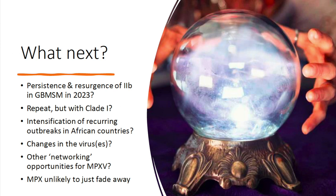What's next? Possibly persistence and resurgence of this 2B virus. The problem, if it has been brought under control by behavioural changes, is whether those behavioural changes will persist — and I don't think we should demand that they persist, because this is people's lives and they want to live their normal sexual lives. Could we see this again but with a more severe virus such as clade one? I think we probably will see more recurring outbreaks in African countries and potentially an intensification of those outbreaks. There may be changes in the virus as it passes through multiple populations — it's quite slowly evolving, but the virus in 2022 has already got about 50 mutations different from the known nearest neighbour virus.